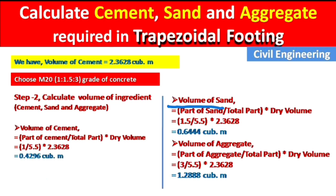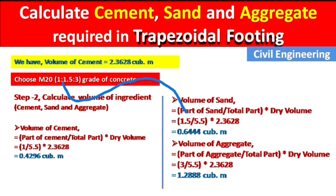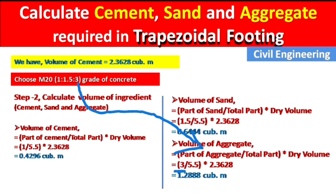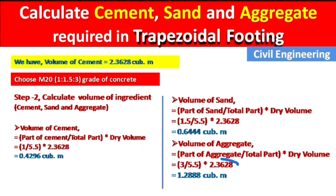Volume of sand = (1.5 / 5.5) × 2.3628 = 0.644 m³. Volume of aggregate = (3 / 5.5) × 2.3628 = 1.2888 m³. We have now calculated the volumes of all three ingredients: cement, sand, and aggregate.